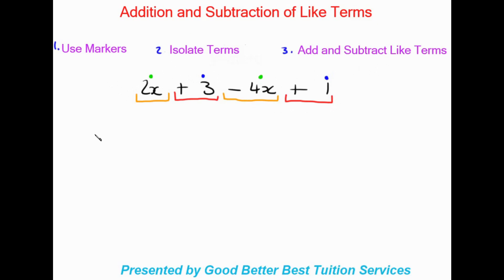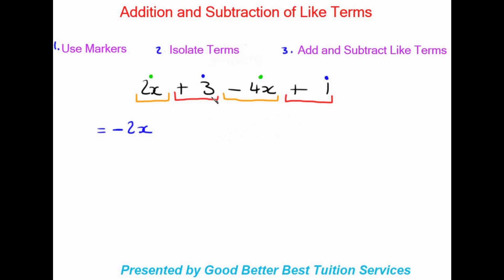We have 2x and we have minus 4x — those are the like terms. So 2x minus 4x: 4 is the bigger number, so we keep the sign of the bigger number, which is negative, and we minus the smaller from the bigger: 4 minus 2, keeping the variable. So we get negative 2x. Then we're left with 3 plus 1, which gives me plus 4. That is the final answer.